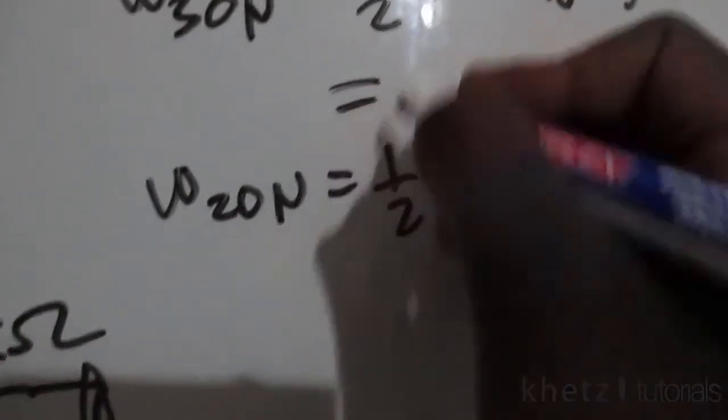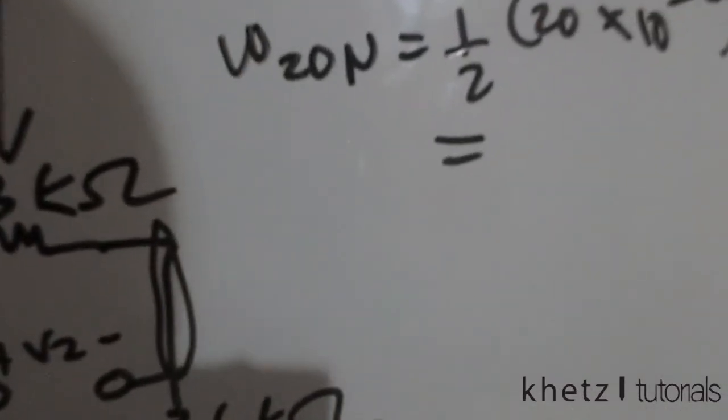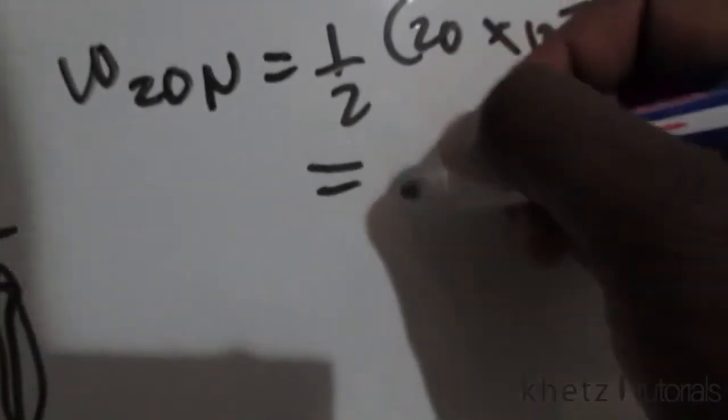Punching both into a calculator should give you the following values: for the 20 microfarad, you should get 810 microjoules, and for the 30 microfarad, 135 microjoules. And that is how you solve this problem.